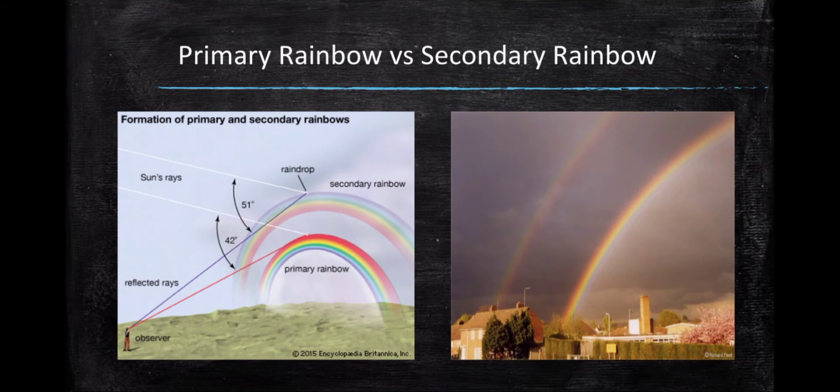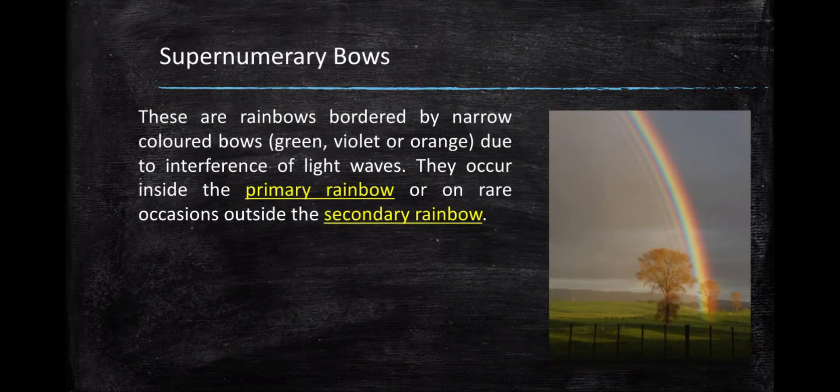Now, I have here an illustration and a real-life picture of primary rainbow and secondary rainbow. As we can see, primary rainbow is smaller than the secondary rainbow. Also, the colors are clearer in the primary compared to the secondary, plus the secondary is larger than the primary. And also, in the real-life picture.